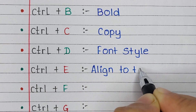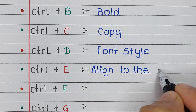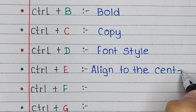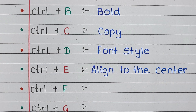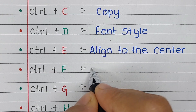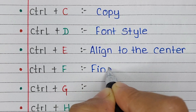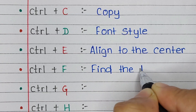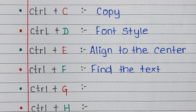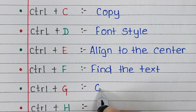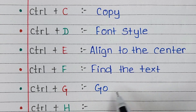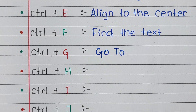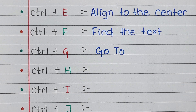Next one is Control E. Control E is the shortcut for Align to the Center. Next one is Control F. Control F is the shortcut for Find the Text. Next one is Control G. Control G is the shortcut for Go To.